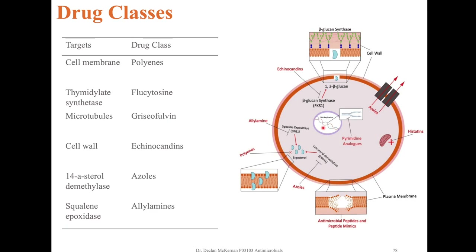In the cell membrane, the polyenes target specific sterols. In the cell wall, the echinocandins target the synthesis of a cell wall component. In microtubules, griseofulvin binds to the structural protein and prevents cell division. Other drug targets include the enzymes thymidylate synthetase, sterol demethylase and squalene epoxidase. We will now discuss each one of these in more detail.